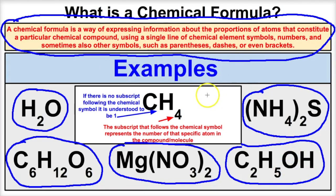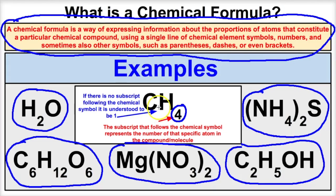A chemical formula basically tells us the proportions or the number of each atom there are in a given compound or molecule. If we take a look at methane or CH4, these subscripts that follow the chemical symbols tell us the number of atoms of that particular element in a given compound. The subscript of four means there are four hydrogens. Anytime we don't see a subscript, it's understood to be one — just like a coefficient in algebra: if we have the variable x, it's understood there is a one in front of it.